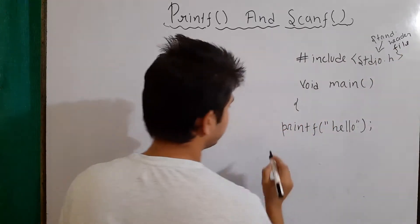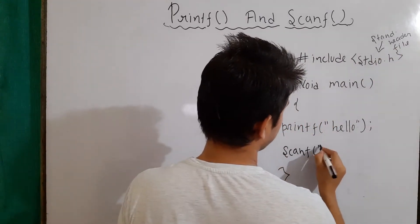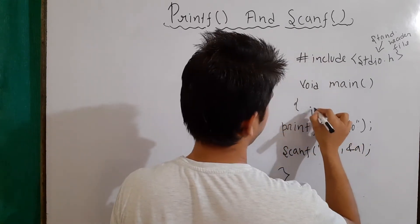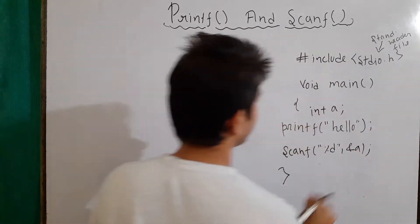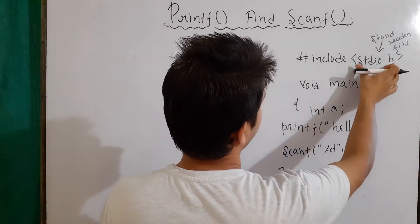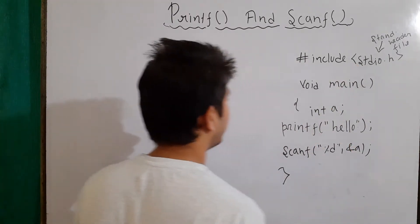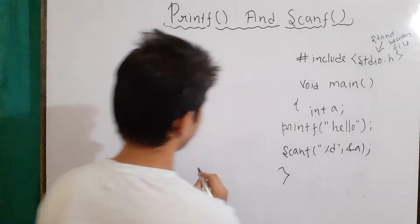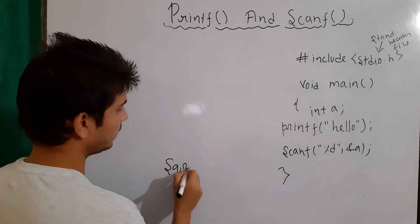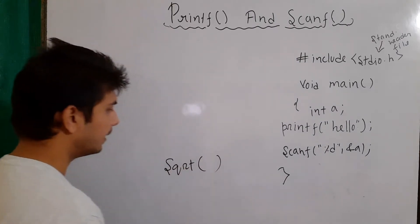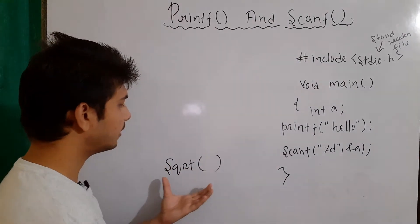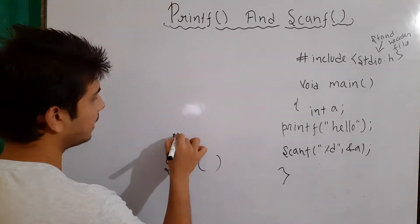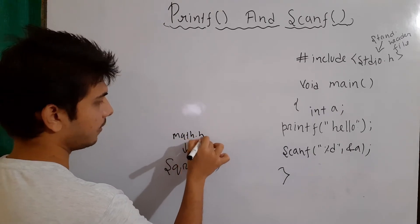Similarly for scanf, its prototype is also defined in this file. Now if I'm using any built-in function — for example, if I want to use the square root function, which is also a built-in function — then I have to include its prototype. For this function, the prototype is defined in the math.h header file.